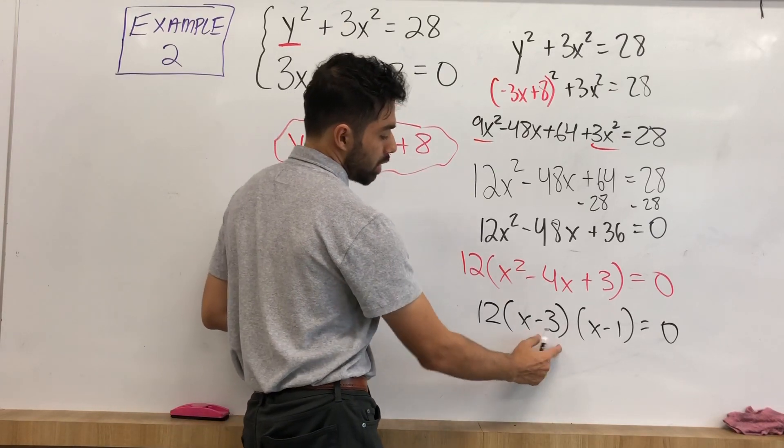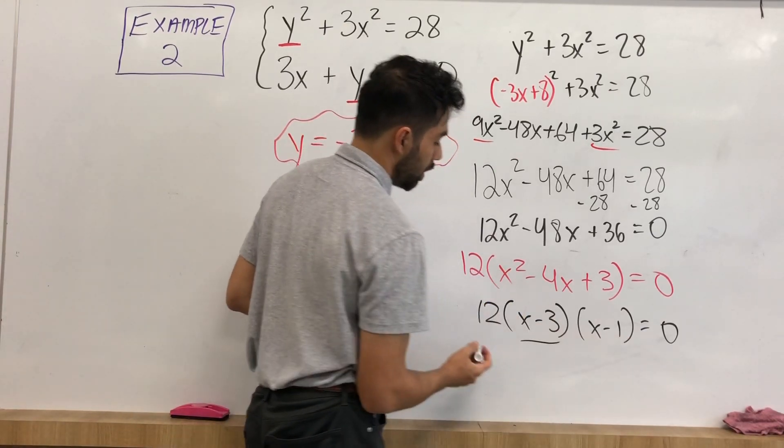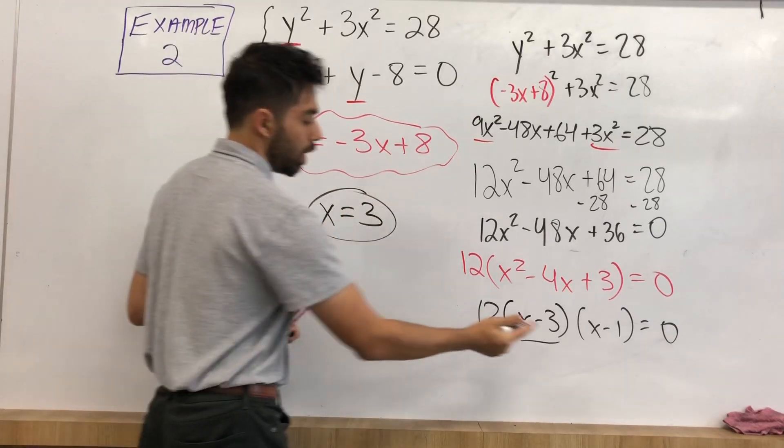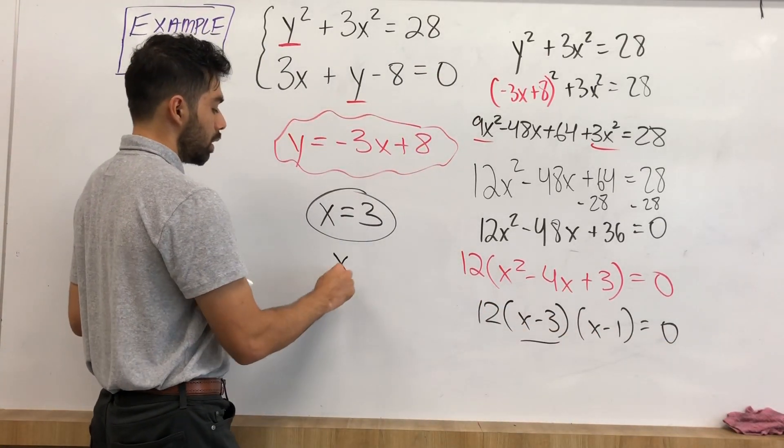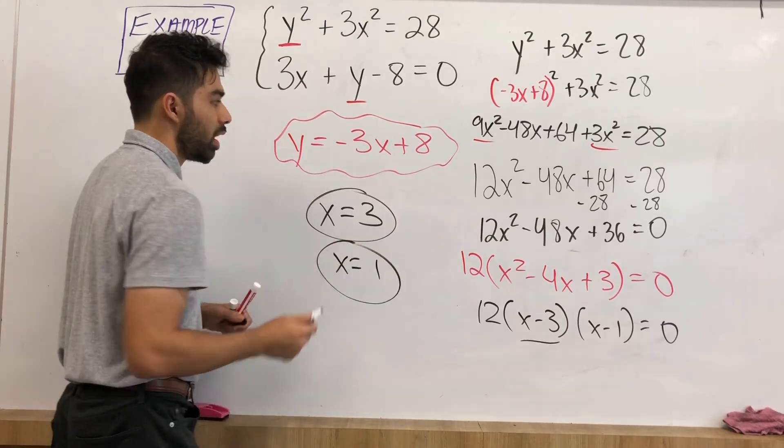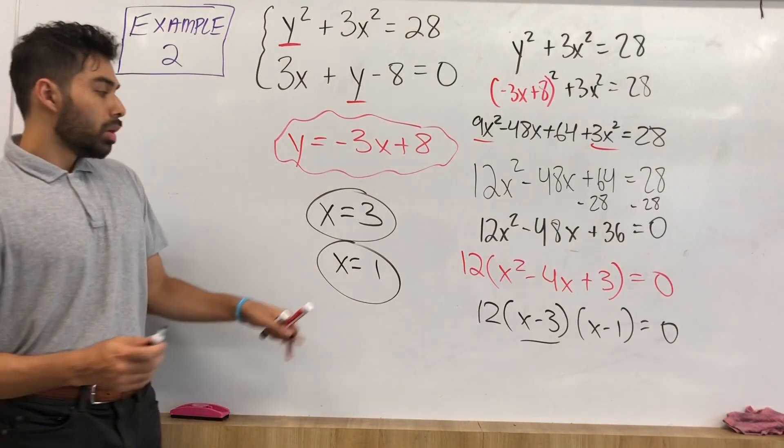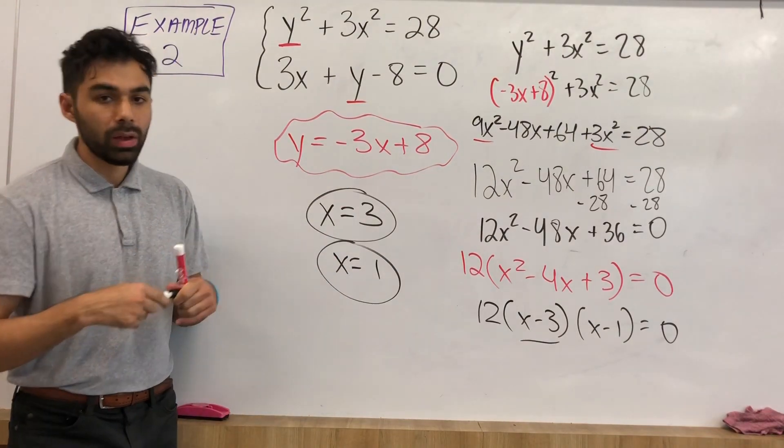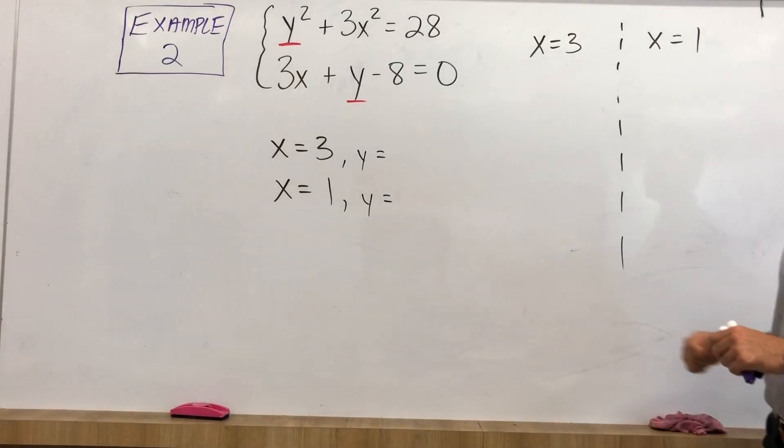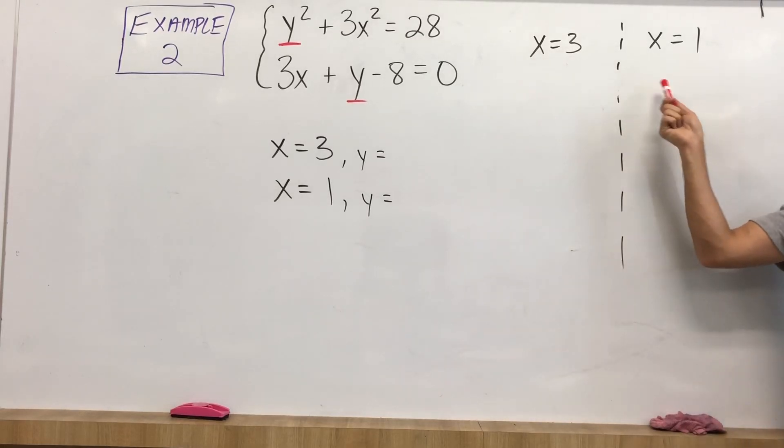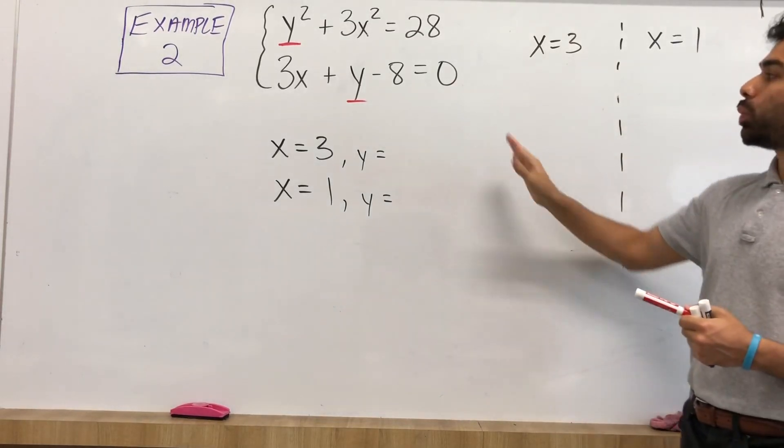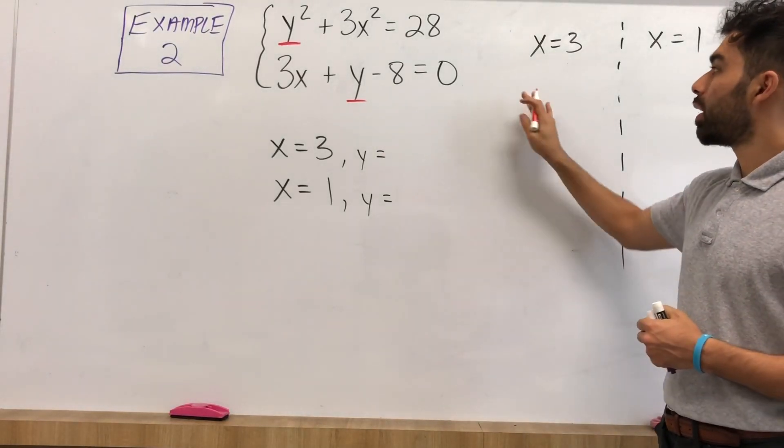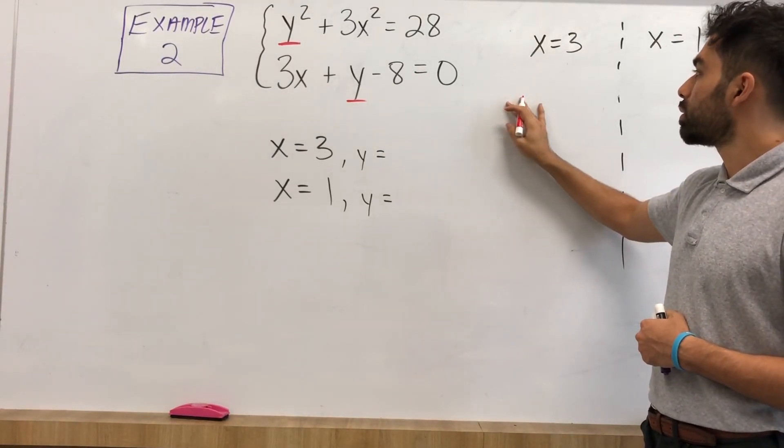Now set both of these equal to 0. x minus 3 equal to 0. That would mean x is equal to 3. x minus 1 equal to 0. That would mean x is equal to 1. So we have both our x values. We just have to go ahead and plug these in to find what our y values are.